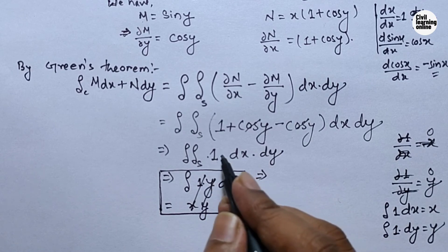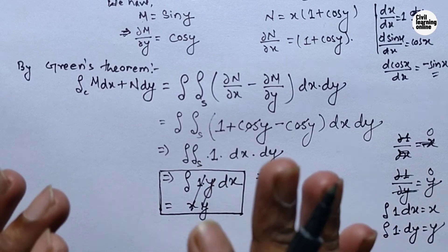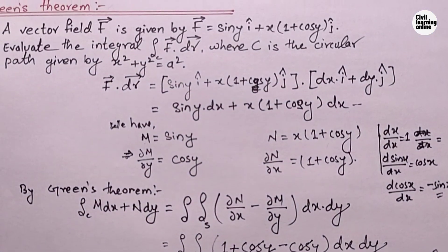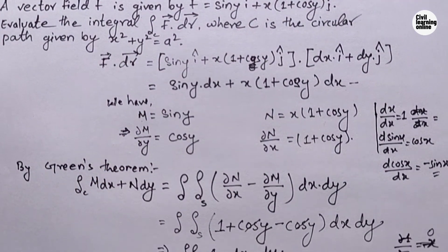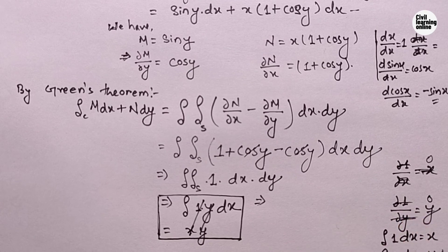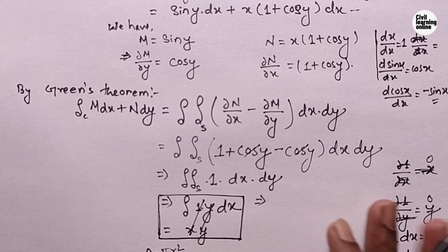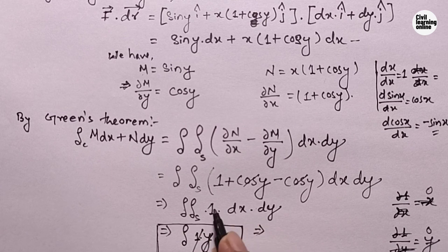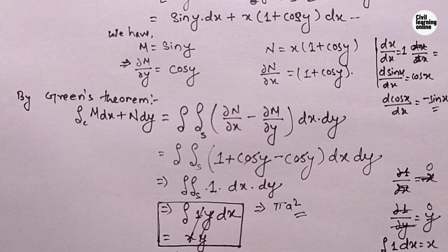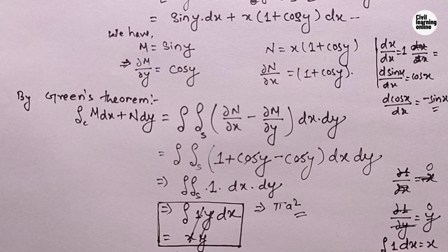The double integral of 1 over the surface area, with respect to dx and dy, equals the area bounded by the closed curve. Since C is the circular path x² + y² = a², the enclosed area is that of a circle with radius a. Using the formula πr², with r = a, the area is πa². So the answer to this question is πa². I hope you enjoyed this lecture — see you in the next one where we'll solve another example based on Green's theorem, also important from the exam point of view. Stay safe and take care.